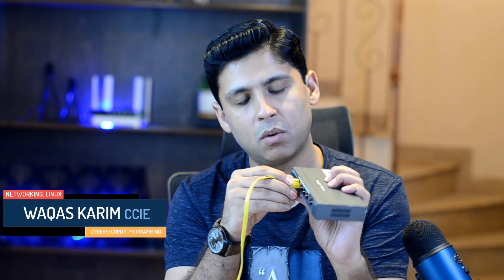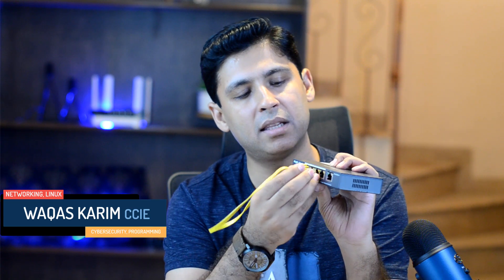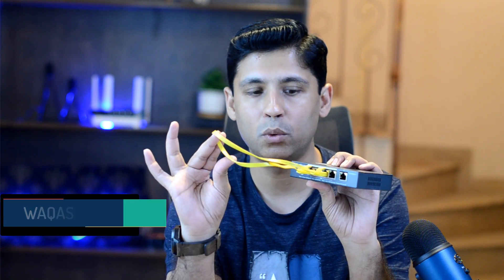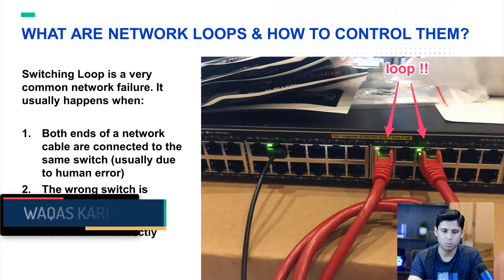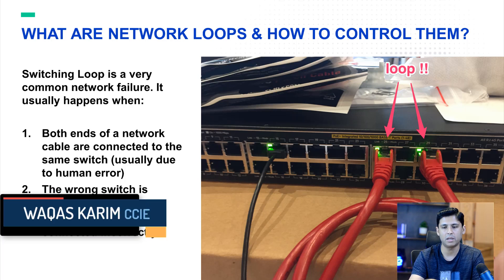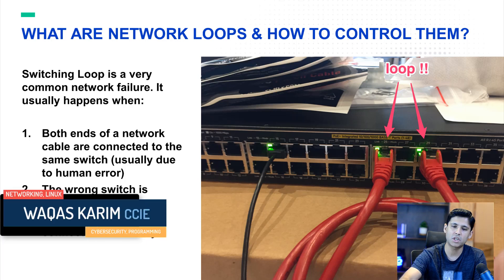By mistake, if we connect two ends of a cable — one port here and another port here — this creates a layer 2 loop. Data broadcasted from one port will come back from the other. As shown in the diagram, another problem is a wrong switch being connected, or it can happen due to a wall socket port connected incorrectly. These are three common reasons which can cause network loops.